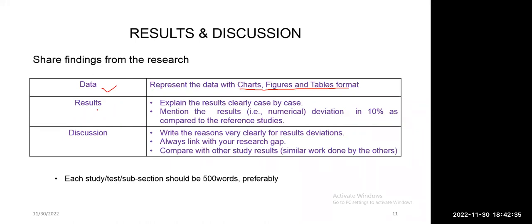Once you mention the data, you have to explain the results very carefully. How do we need to explain the results? For example, if you are working on compressive strength of a concrete, and you have taken five sets of samples, within the five sets one set is the reference and four sets are special mixes. Now you have to explain: as compared to your reference set, how much percentage the strength is increased or decreased in your special mix. Like that, you have to mention with reference to the reference sample, and each test you have to follow like this.